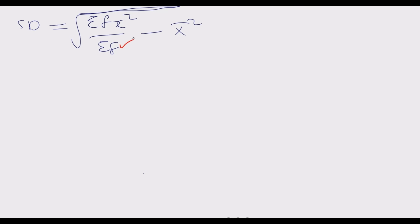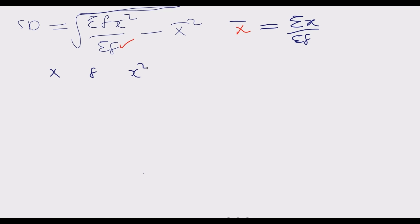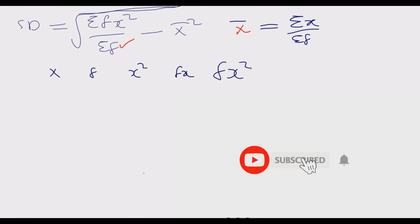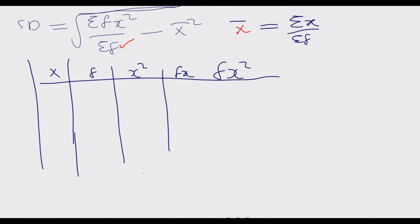The mean is given by summation of x values divided by the number, which in this case is the summation of frequencies. From the data points given, we need to find the values of x (the midpoints). Once we know x, we sum the frequencies, square the x values, multiply frequency by x to get fx, then multiply frequency by x squared to get fx². These are the columns you need in your table.